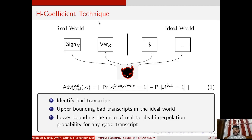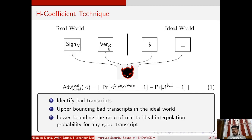Now we briefly discuss the H-coefficient technique, a very powerful combinatorial tool used to bound the distinguishing advantage of two random systems. We assume the two random systems correspond to the signing and verification algorithms in the real world. In the ideal world, we have two random systems: a random function and a reject/abort oracle. An adversary interacts with a pair of oracles, either in the real world or the ideal world. In the real world, the adversary has access to the signing oracle and verification oracle, which are keyed but inaccessible to the adversary.